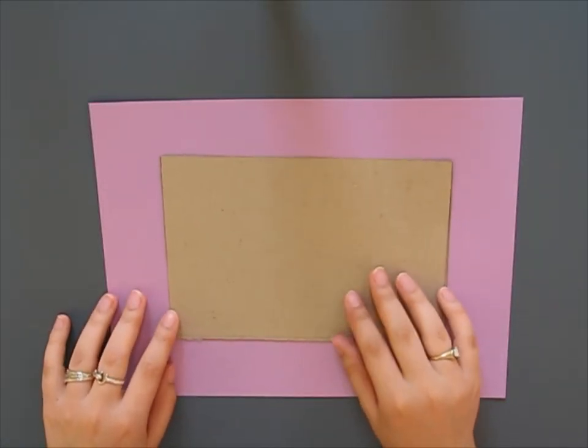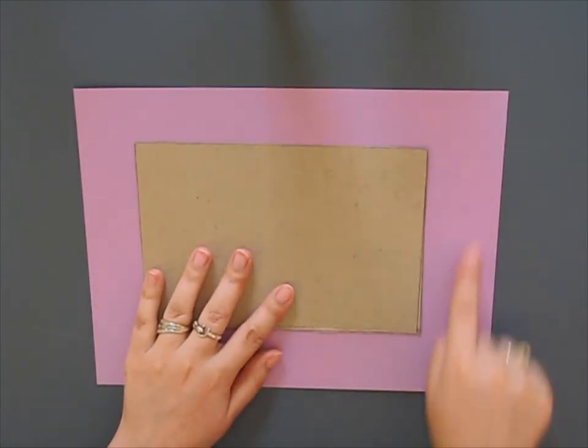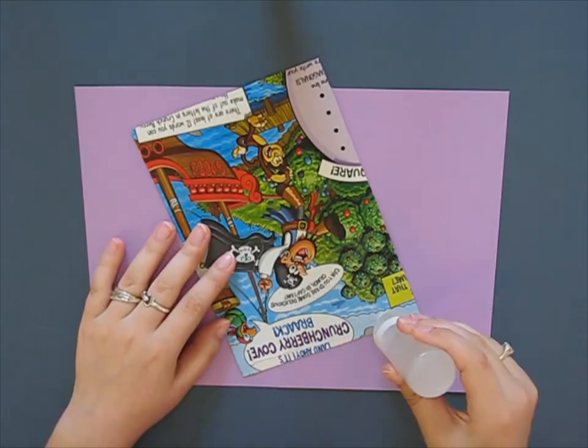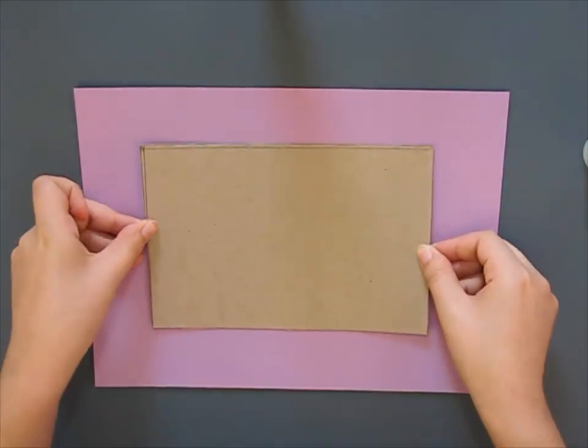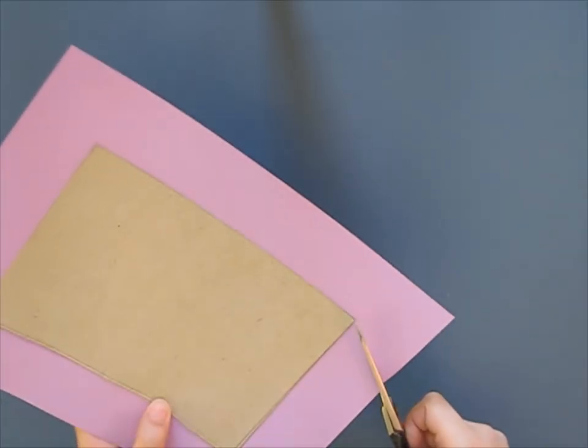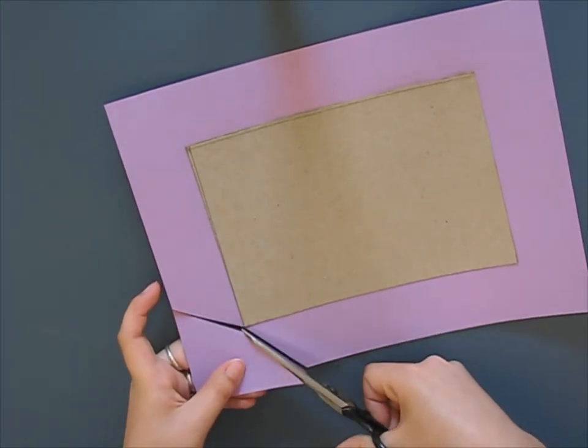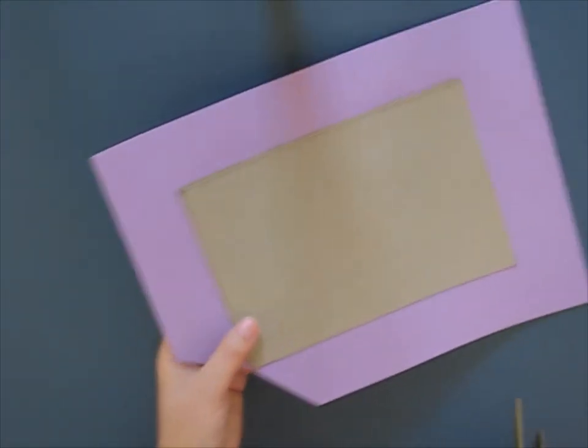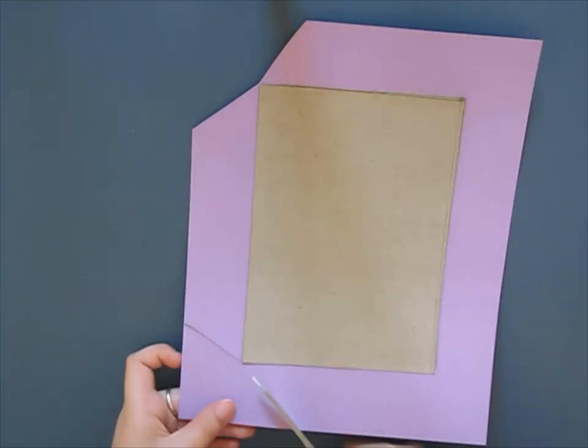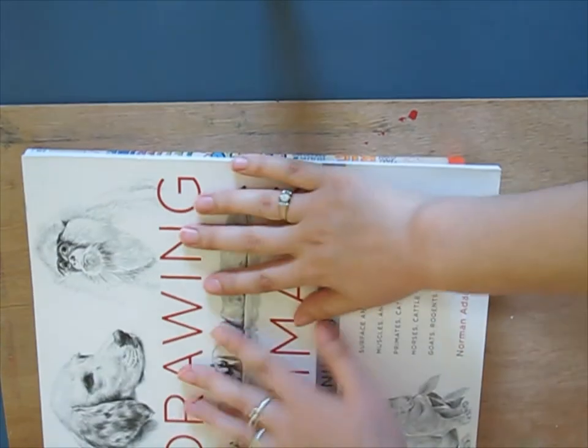Once we have the cardboard cut out, we are going to paste it onto our cardstock, leaving about a 1-inch overhang around the entire piece of cardboard. Then what you want to do is cut the corners off. This will create tabs that we will then fold over and glue to the back of our piece of cardboard. Once you have that done, it may warp a little. To prevent this, you will put the cover and the back underneath some heavy books to help ensure that it dries flat.